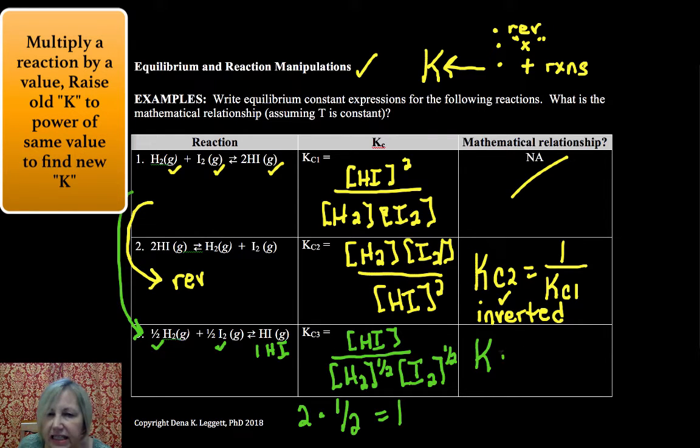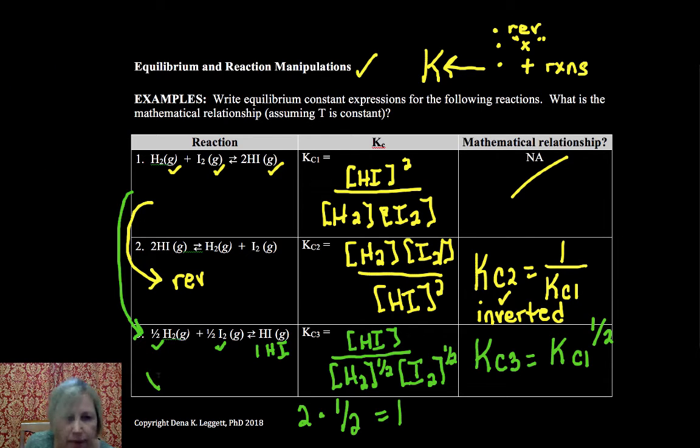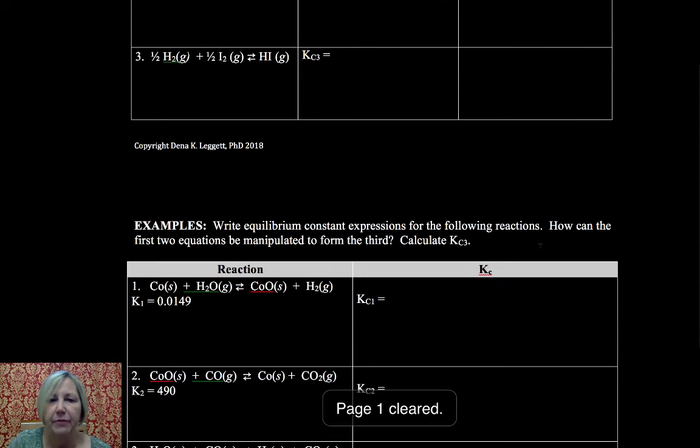What we see is this third KC is equal to our original one to the same power as what our multiplier was. So our multiplier was one half and our power is now one half. If you compare this to this, you see that we took the square root or took it to the one half power. So when we multiplied by the power, we raised K to that same factor. And that's what we did with that mathematical manipulation.